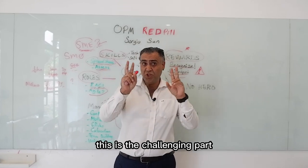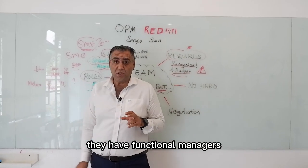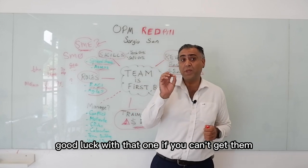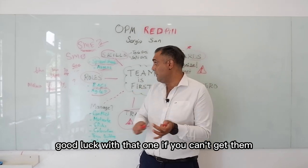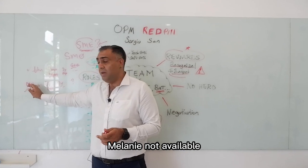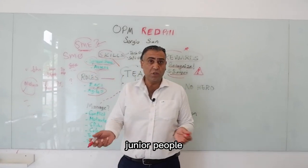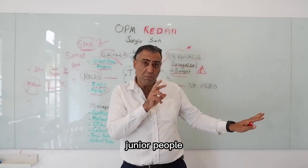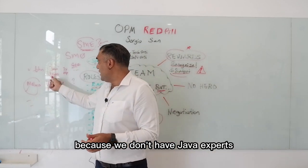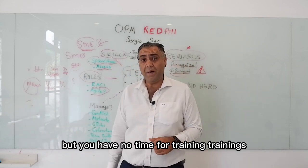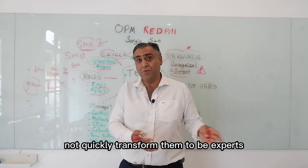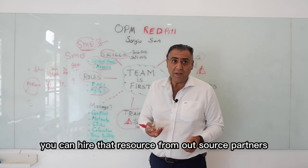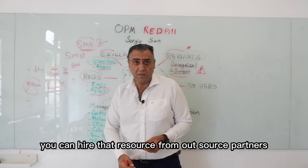Check with the functional manager — this is the challenging part. They have functional managers and you want those people for your project, but they may be busy. Negotiate with functional managers — good luck with that. If you can't get them — John not available, Melanie not available — you have two options: train junior or less experienced people, or outsource and hire that resource from an outsource partner temporarily.